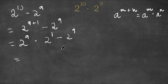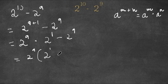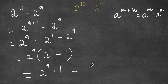Now I'm going to factor out 2 to the power of 9 from this. So if I factor out 2 to the power of 9, I get 2 to the power of 9 times — 2 to the power of 9 divided by 2 to the power of 9 is 1 — and this equals 2 to the power of 1 minus 1, which is simply 1. So I have 2 to the power of 9 times 1, which equals 2 to the power of 9.